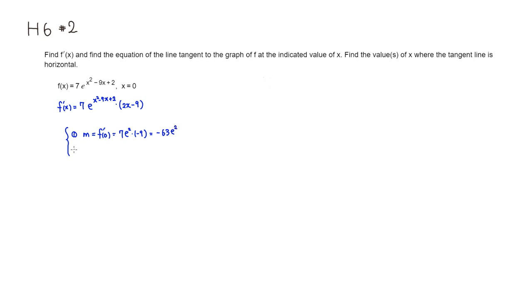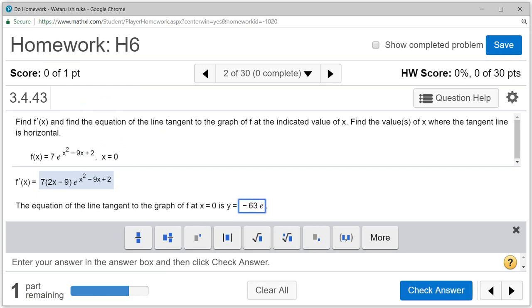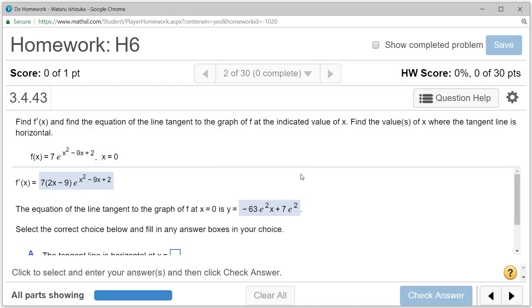That's a big quantity for the slope. For the y-intercept b, we find f of 0: 7 is a constant and plugging in 0 gives e squared. So in slope-intercept form, the equation is y equals negative 63 e squared x plus 7 e squared. Let's type that in and check the answer — we got it.